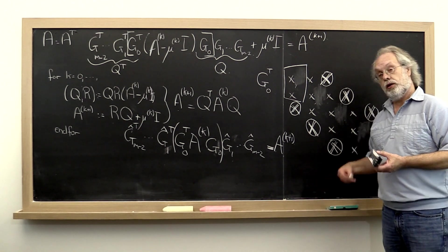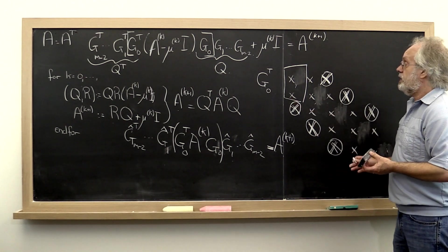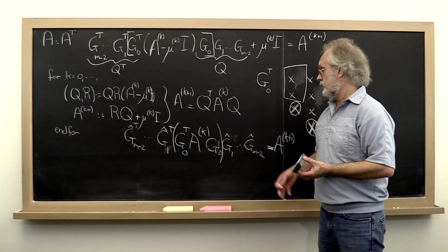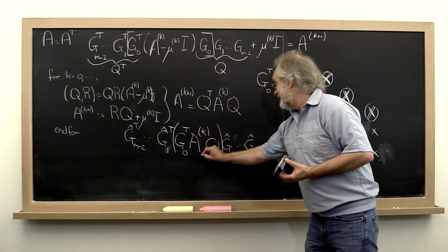And in the process we have computed all of these Givens rotations which, if you multiply them all together, would give you the same Q.